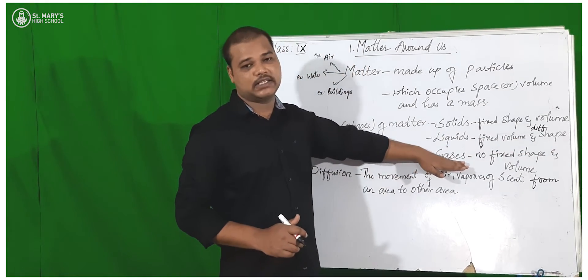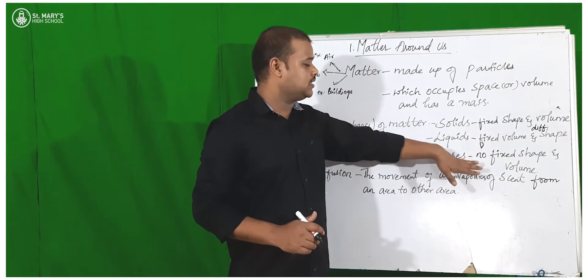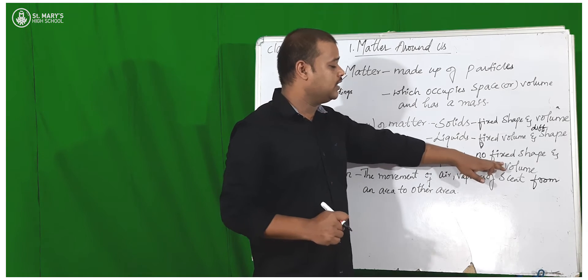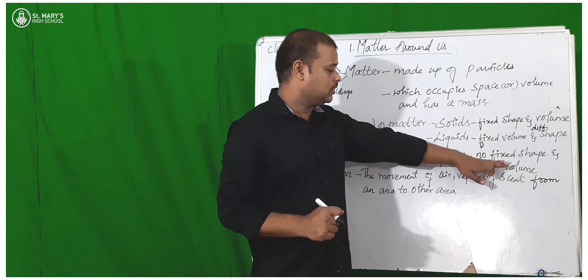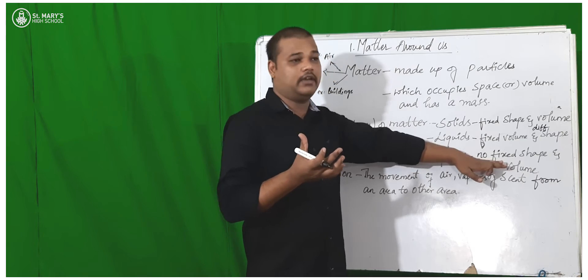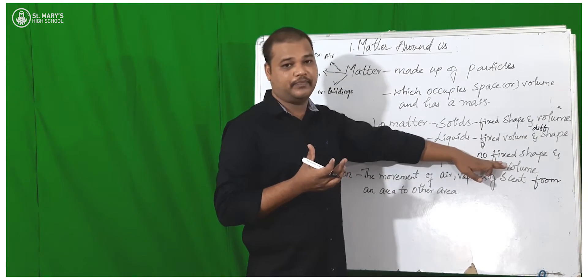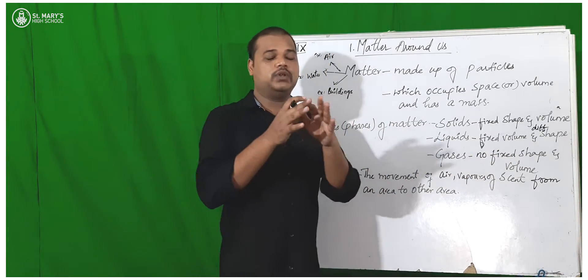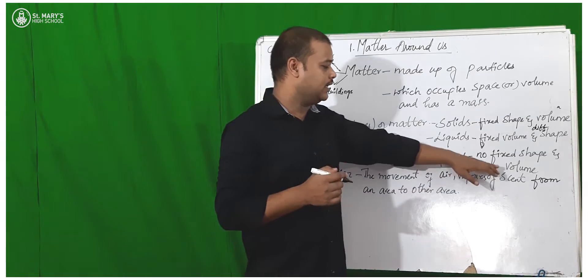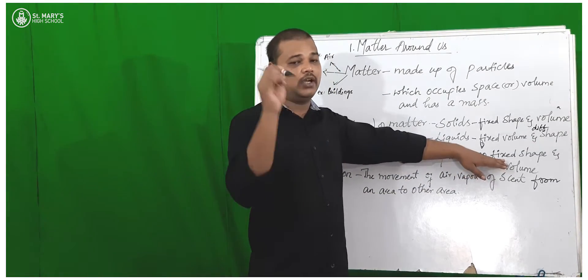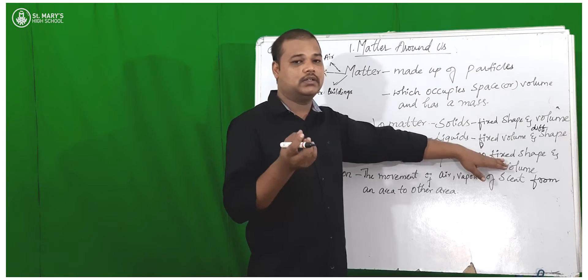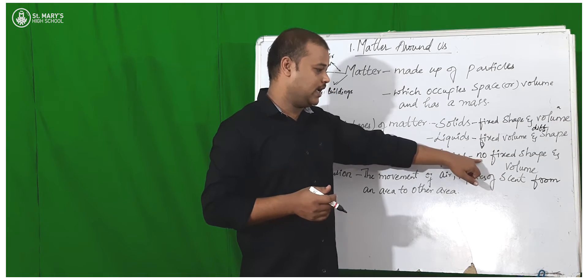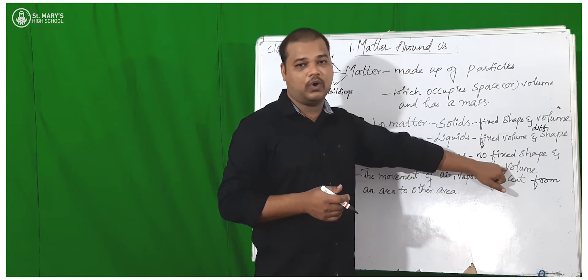Now about gases. We can take a balloon. Inside the balloon we can see air particles. When there are air particles, the shape of the balloon will be different. Then take a pin and make a hole in it — what will happen? The shape comes back to its initial position. So we can see that gases have neither a fixed shape nor a fixed volume.